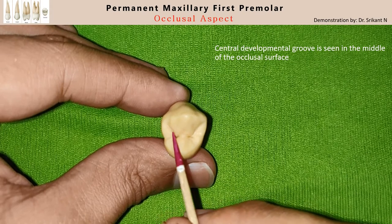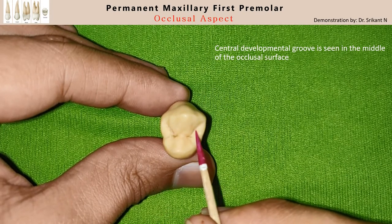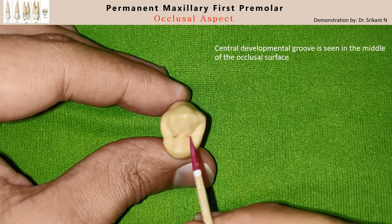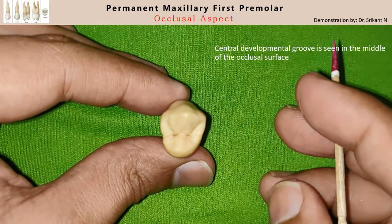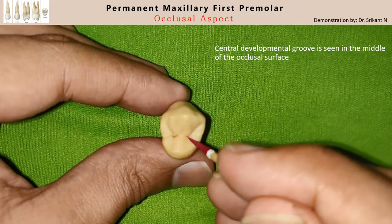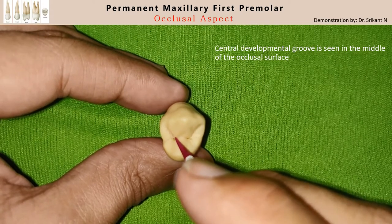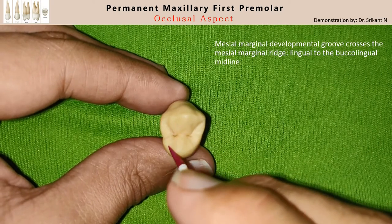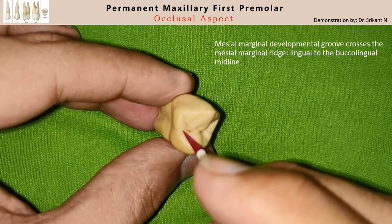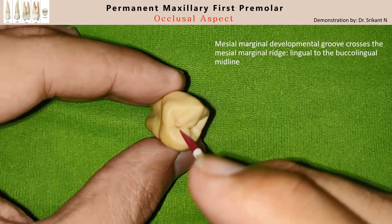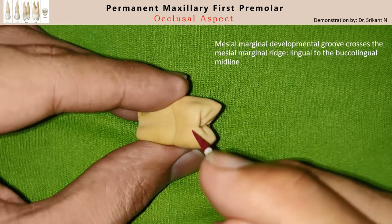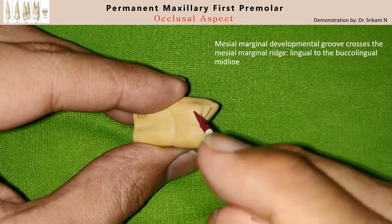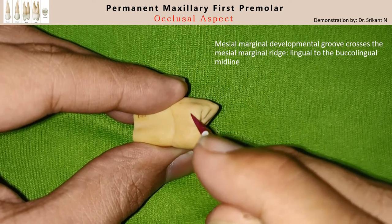When you look at the occlusal surface, you observe a developmental groove in the center. This is called the central developmental groove, which extends mesiodistally in the middle of the buccolingual dimension of the occlusal surface. This groove forms a smiley shape, which also continues as a small groove crossing the mesial marginal ridge — this is the mesial marginal developmental groove, which crosses over to the mesial surface and ends after a small distance.